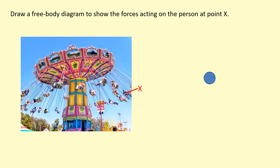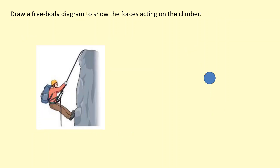Here's another common question: people on swing rides going around in circles. We need to draw the forces on them. Because they're on the seat, the string pulls them upwards and inward — so for this person, the tension in the string acts up and to the left. Of course we have weight acting downwards, mg. If they're maintaining a constant height, the upward component of the tension must balance the downward weight, but there is an overall net force towards the centre, which is what keeps the person going around in a circle.